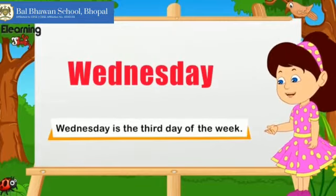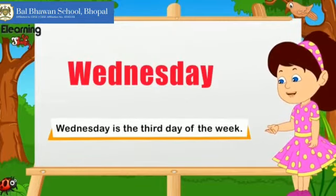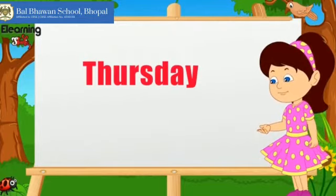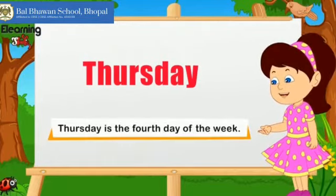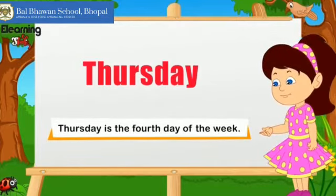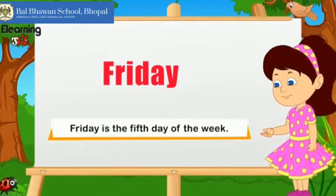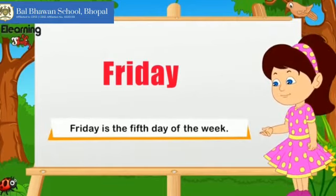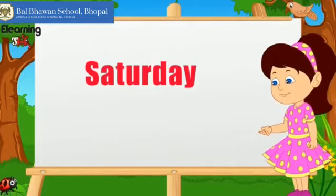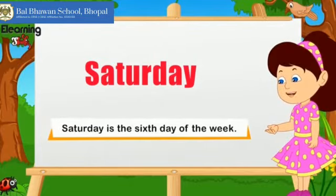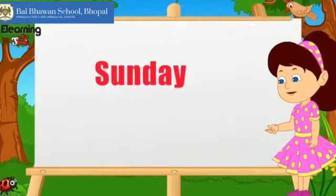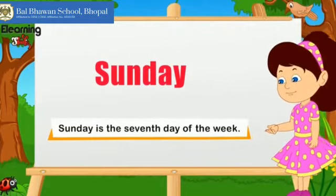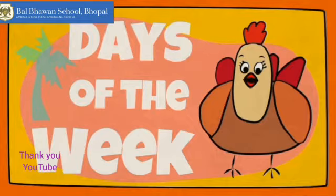Wednesday is the third day of the week. Then tell me — Thursday is the fourth day of the week. Friday is the fifth day of the week. After Friday, which day comes? Saturday. Saturday is the sixth day of the week, and then comes Sunday — Sunday is the seventh day of the week.